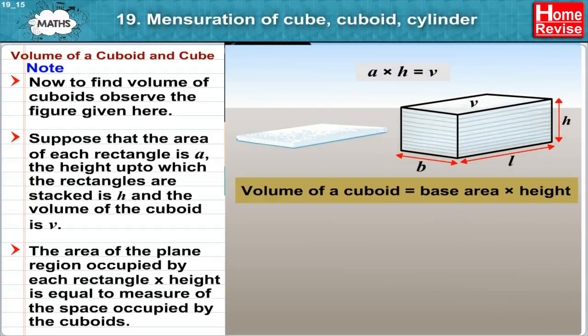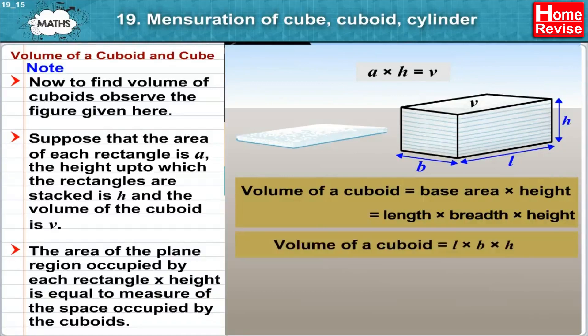That is, volume of cuboid is equal to base area into height, which is equal to length into breadth into height. Volume of cuboid equals L into B into H, where L, B and H are length, breadth and height of the cuboid respectively.